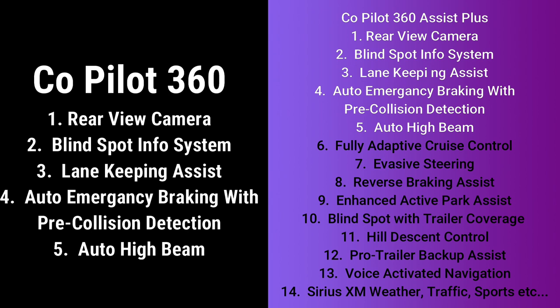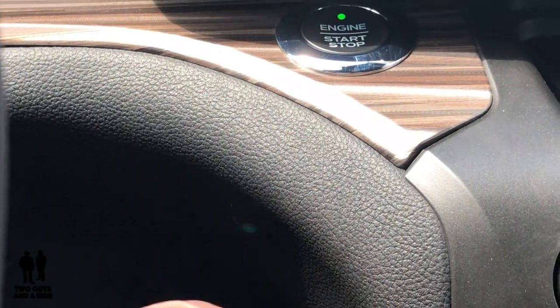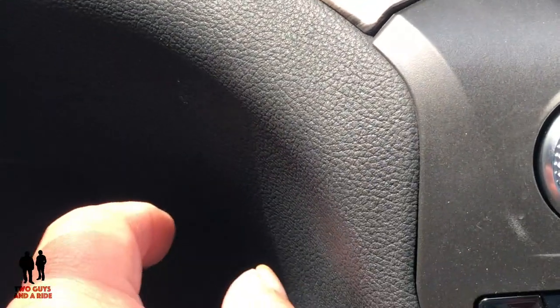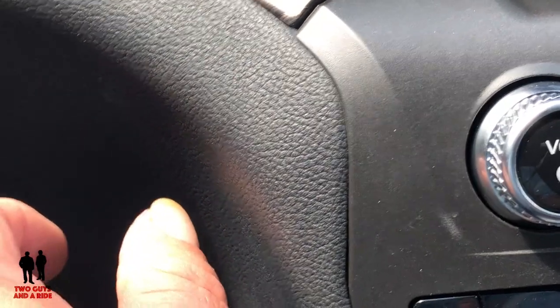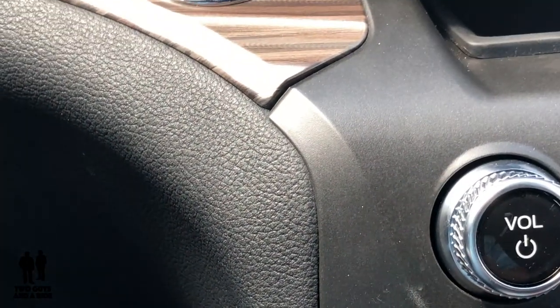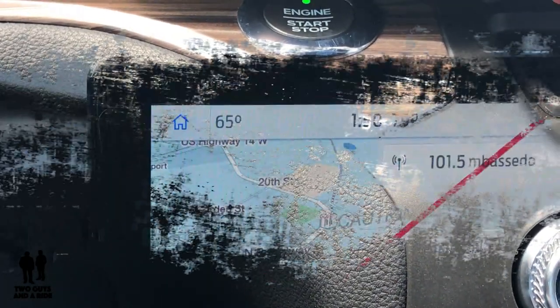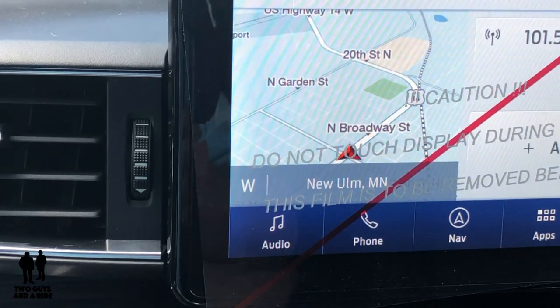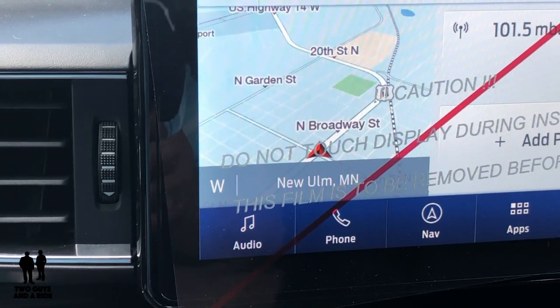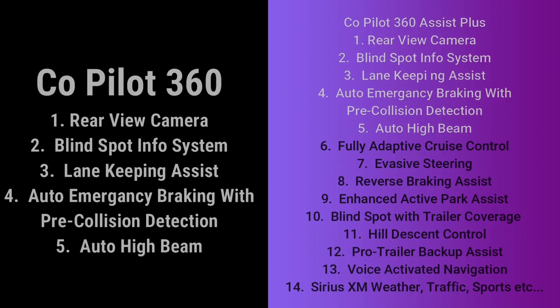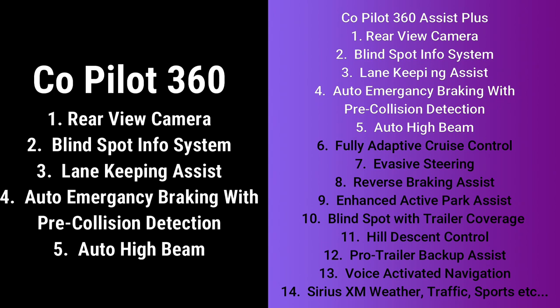There's one more optional feature not on this vehicle but available to add to Co-Pilot 360 Assist Plus: Pro Trailer Backup Assist. It gives you a separate dial — you turn it in the direction you want the trailer to go, and the steering wheel does what it needs to make the trailer go that direction. This is confirmed available on the Ford Expedition and may be available on the Explorer. Voice-activated navigation is also part of the Assist Plus package, as are the SiriusXM traffic, weather, sports, and movie listings.